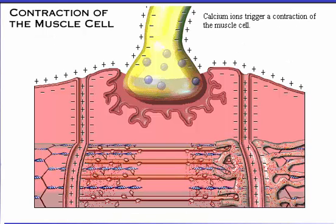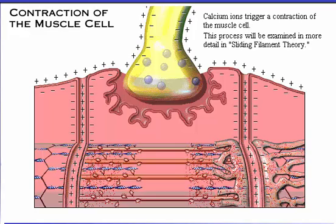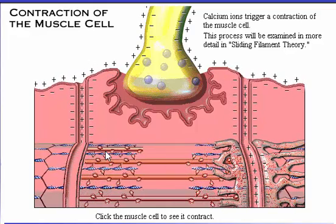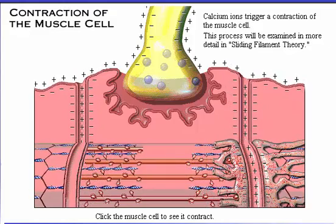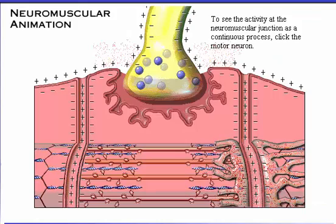Calcium ions trigger a contraction of the muscle cell. This process will be examined in more detail in sliding filament theory. To see the activity at the neuromuscular junction as a continuous process, click the motor neuron.